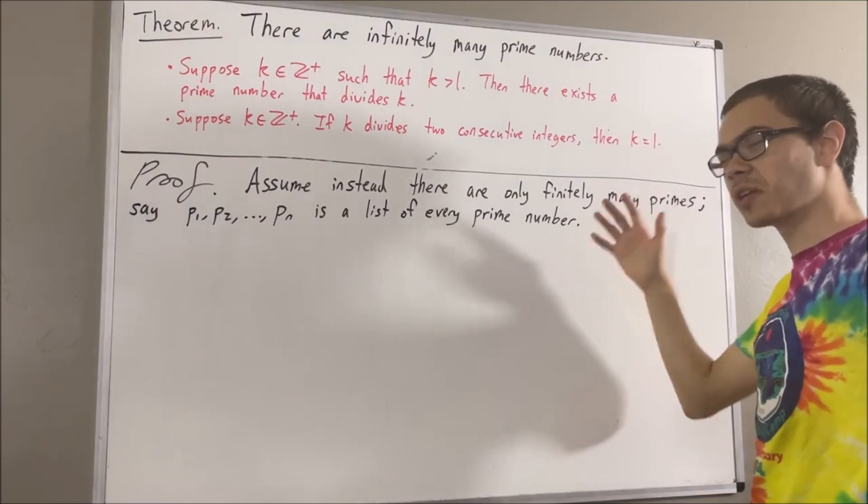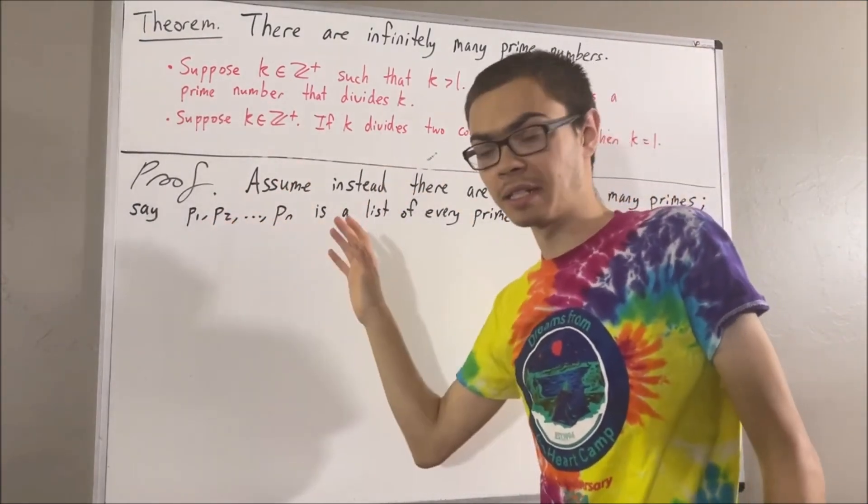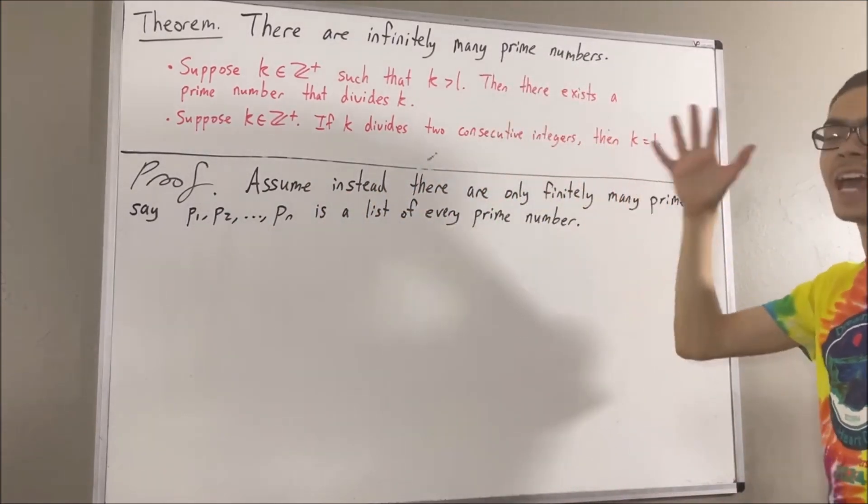From here, let's consider the quantity p1 times p2 times dot dot dot times pn plus 1. We'll call that quantity n.